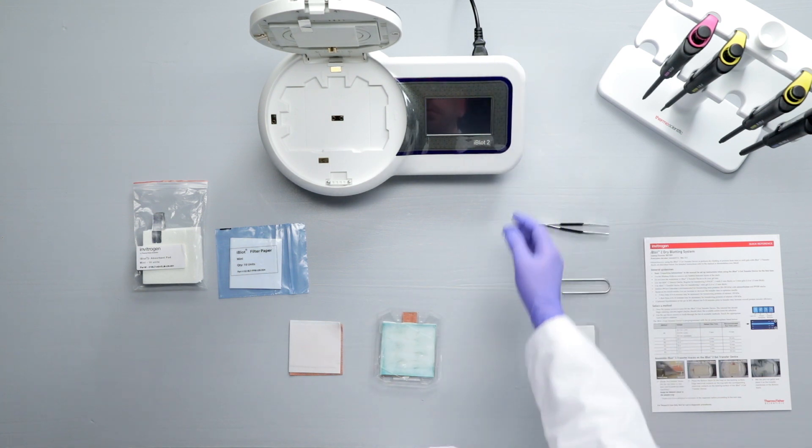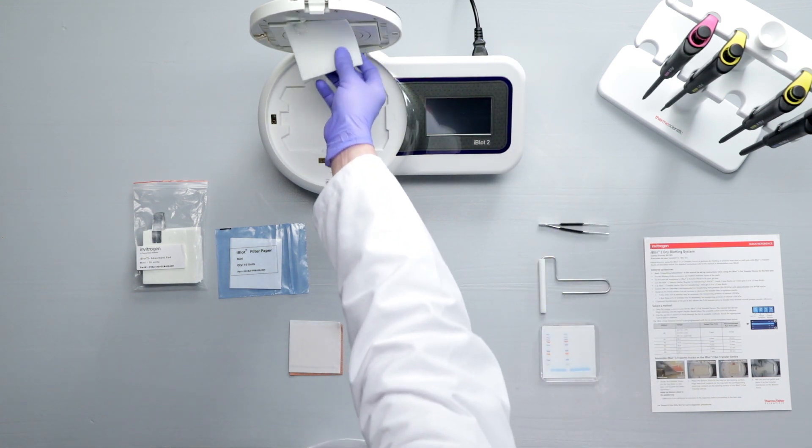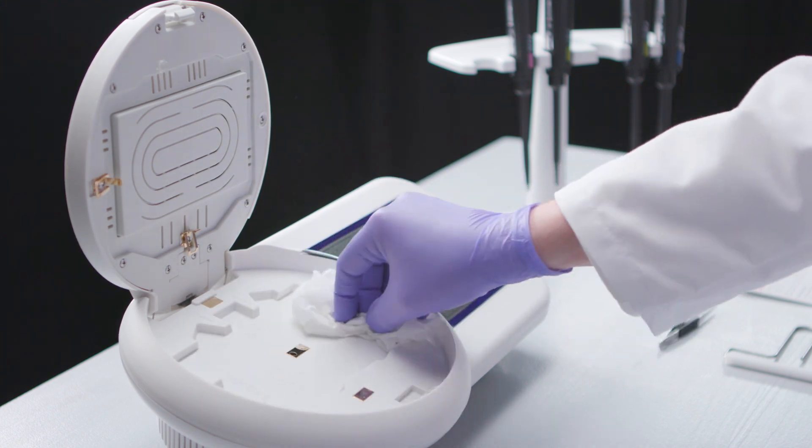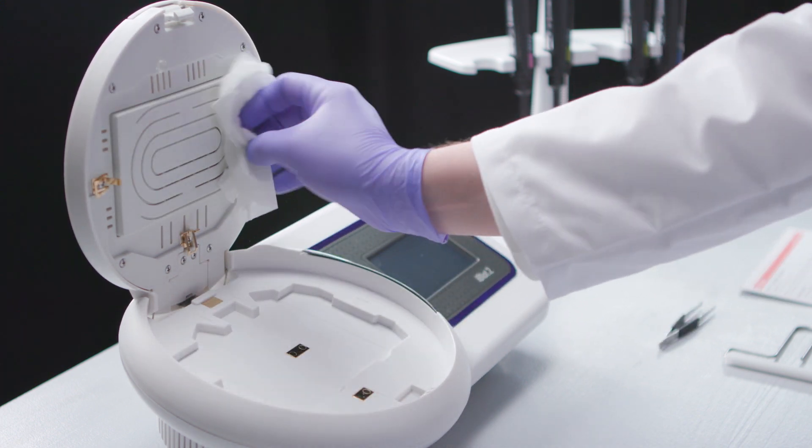To clean the iBlot2 system, make sure the system is turned off. Then, wipe off the blotting surface and electrodes with a damp cloth or tissue paper.